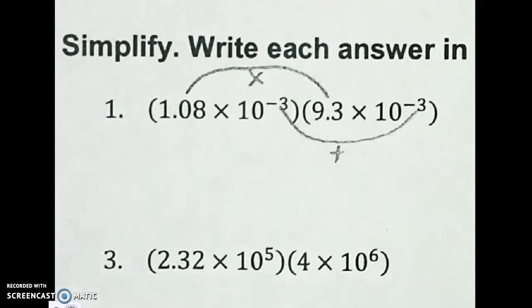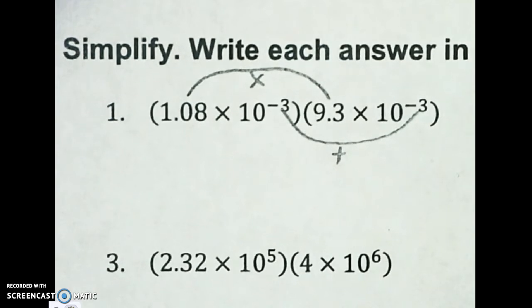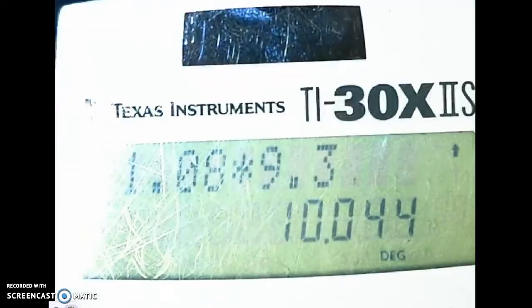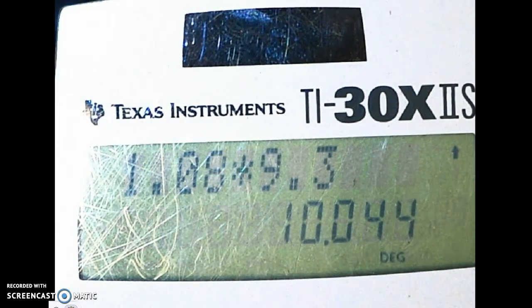So first thing I'm going to do is multiply those together. 1.08 times 9.3. You see what I get? I get 10.044.